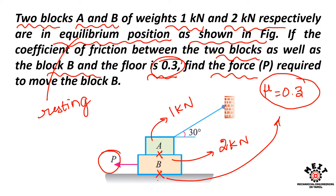You can see in the diagram: block A is on top of block B, and block A is connected by a string to a fixed point, with the string inclined at an angle of 30 degrees.